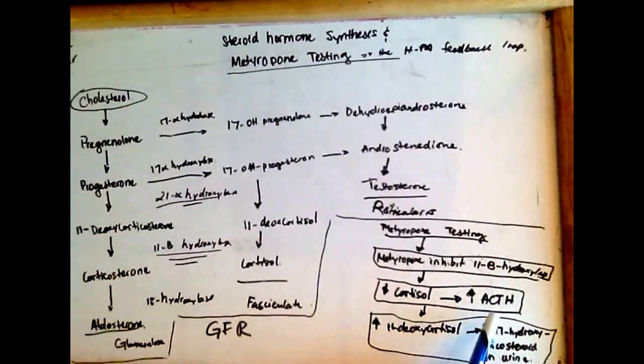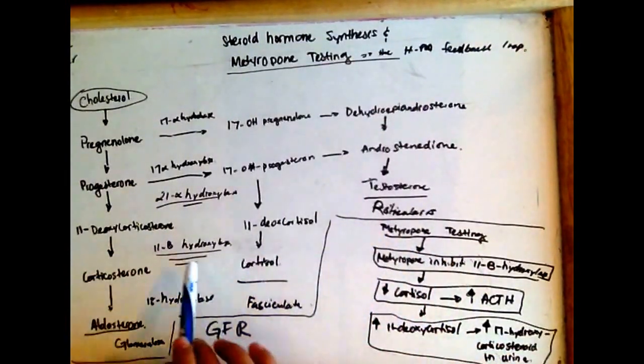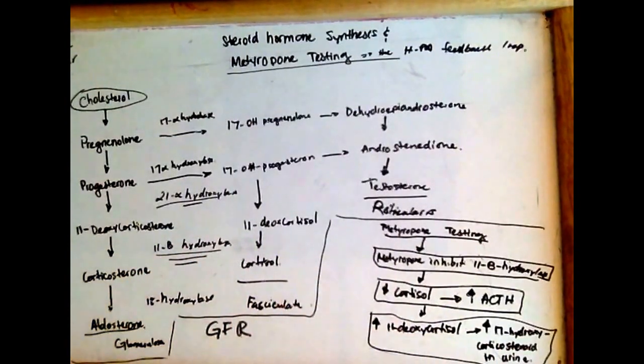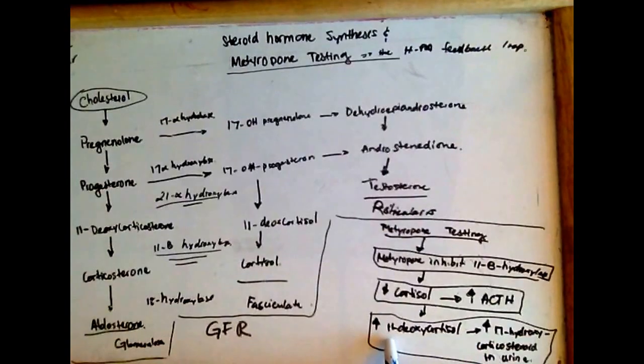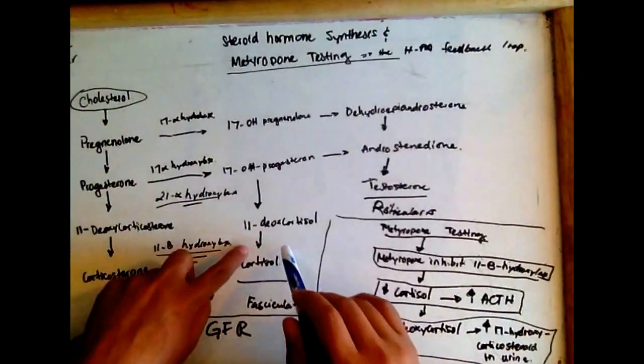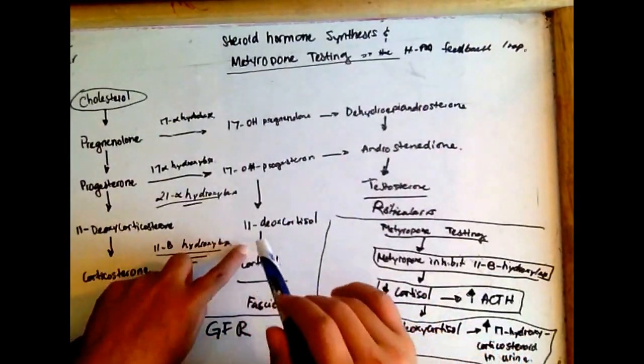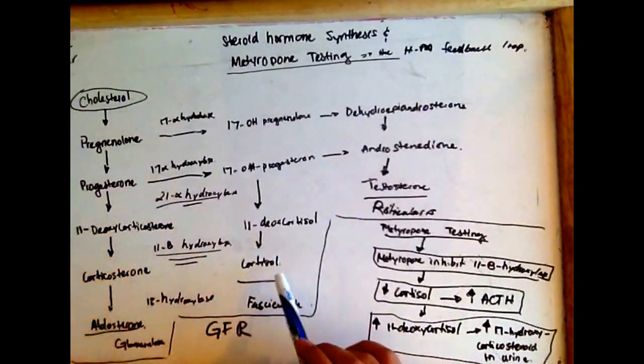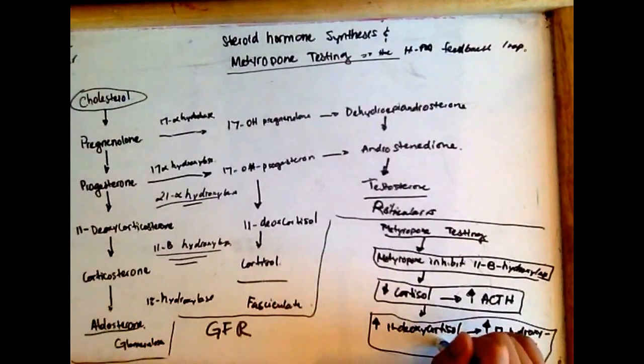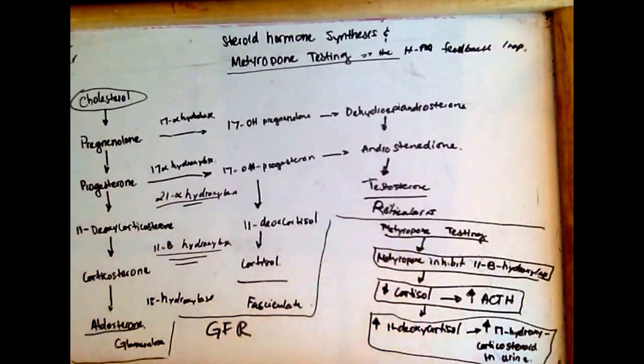When there's an increase in ACTH, it leads to increased production of 11-deoxycortisol. However, because metyrapone inhibits 11-beta-hydroxylase, we see an increase in 11-deoxycortisol, but cortisol levels do not increase because we have blocked 11-beta-hydroxylase by metyrapone.